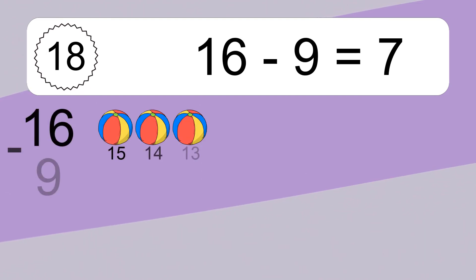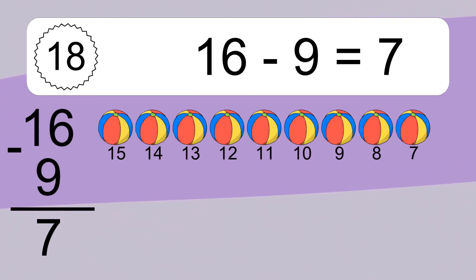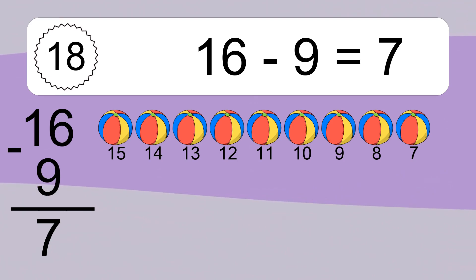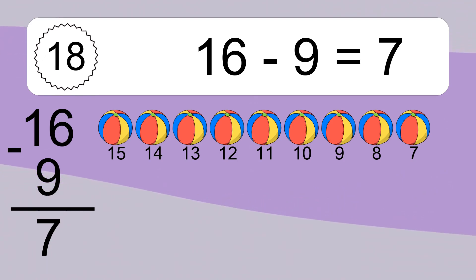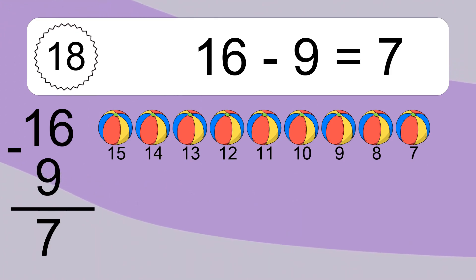16 minus 9 equals what? 16 minus 9 equals 7. Let's count it: 15, 14, 13, 12, 11, 10, 9, 8, 7.